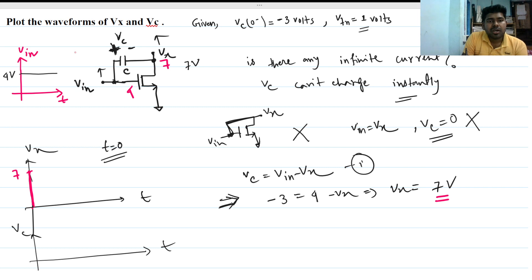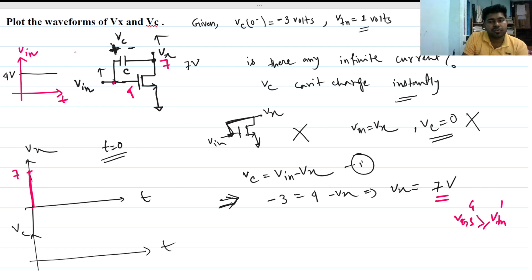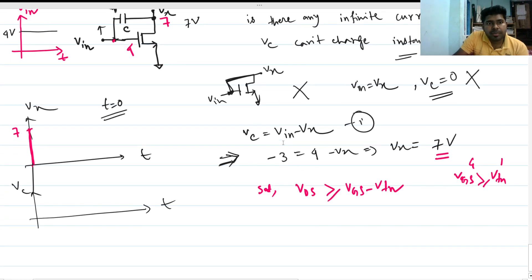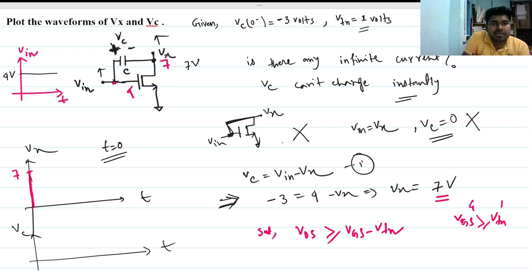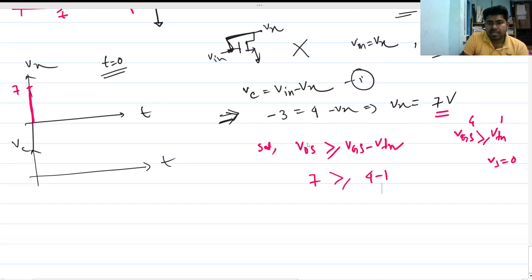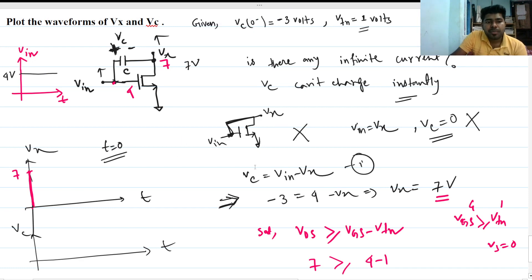We have to check whether the MOSFET is in saturation or triode. For saturation, Vds must be greater than or equal to Vgs minus Vtn. Here Vgs equals 7 volts, because Vs is 0, and Vgs minus Vtn equals 4 minus 1 equals 3 volts. So 7 is greater than or equal to 3 — this condition is satisfied. So after t equals 0, the MOSFET is in saturation.